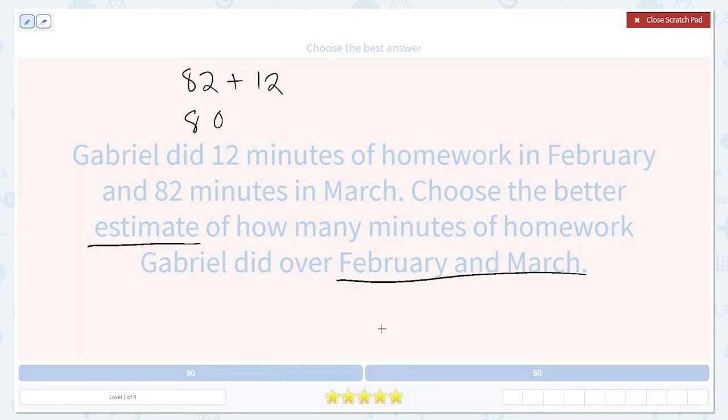12. Since two is less than five, we round down to the nearest 10, which is 10. So now our addition is very easy. 80 plus 10 is just 90. So that is our estimate for the total amount.